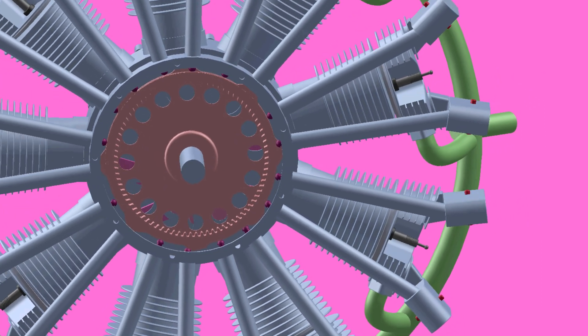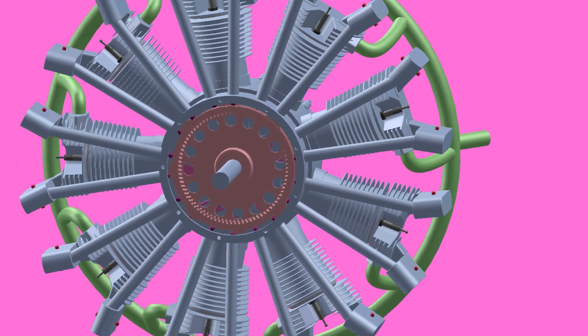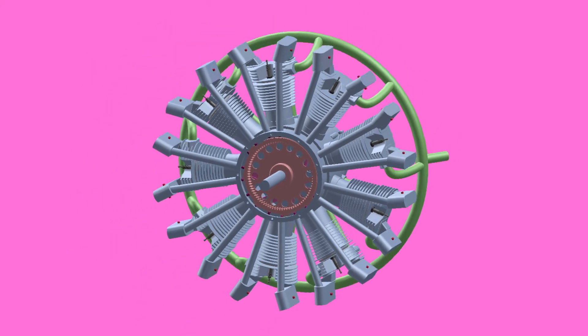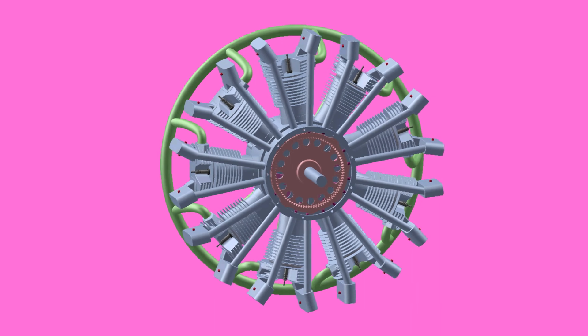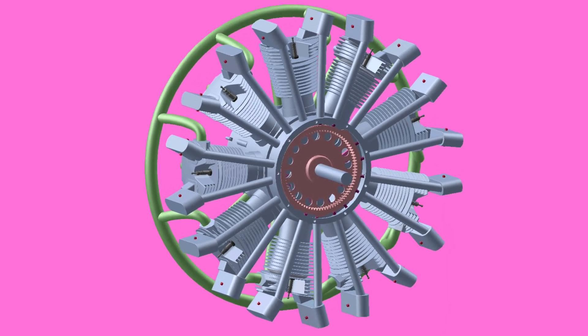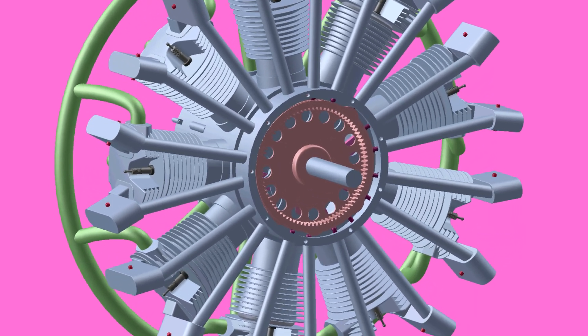When the cam ring completes 2 revolutions, the inlet and outlet valves will open and close 8 times. As we know, when the crankshaft completes 2 revolutions, the inlet and outlet valves will open and close 1 time.